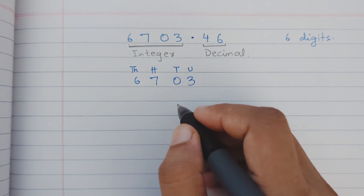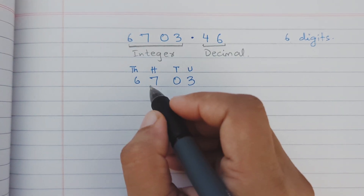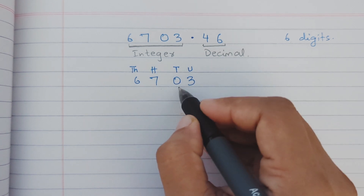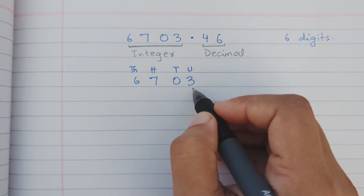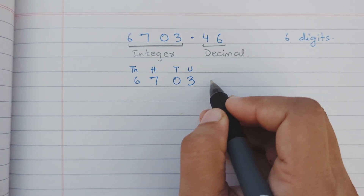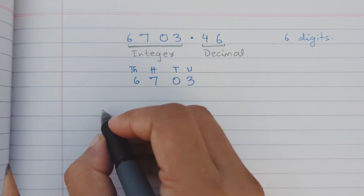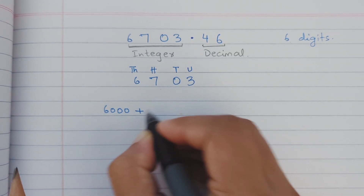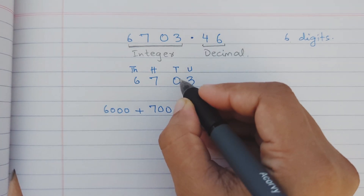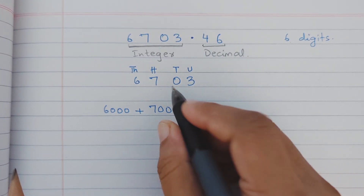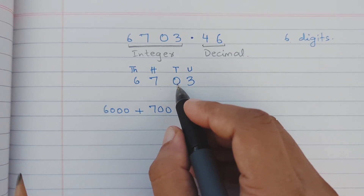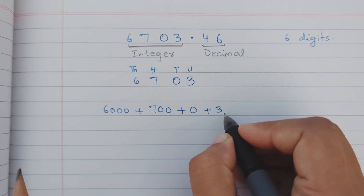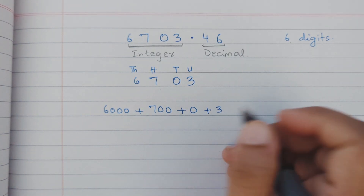If I need to read out this number it would be six thousand, seven hundred, zero tens, and three. The value of six is six thousand, the value of seven is seven hundred, the value of zero is zero — wherever zero comes it has the value zero — and the value of three is three because it's in the units place.